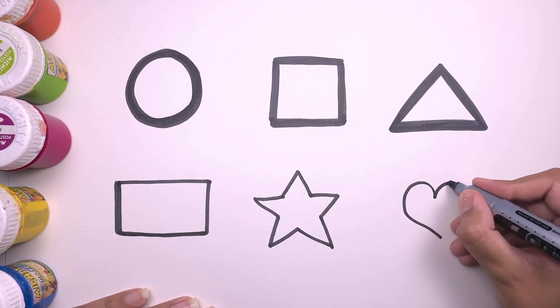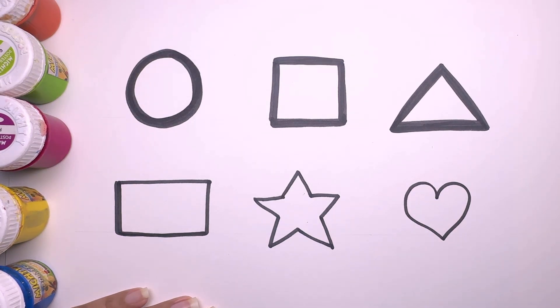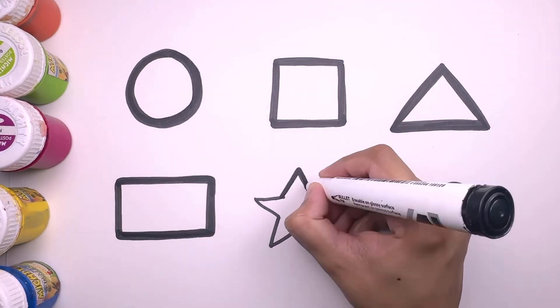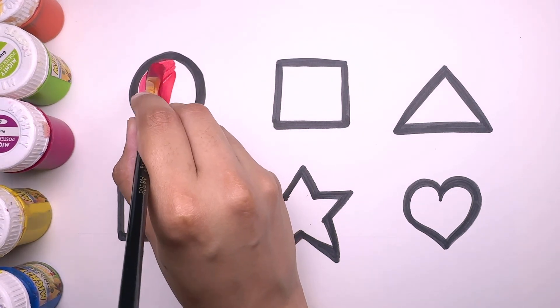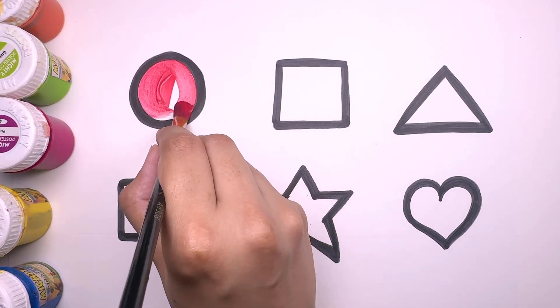Now, you are drawing a heart. H for heart. W, X, Y, and Z. Now, I know my ABCs. Next time won't you sing with me.